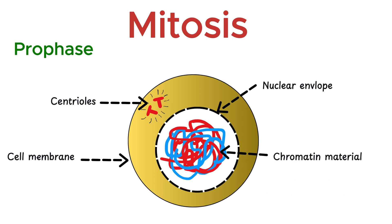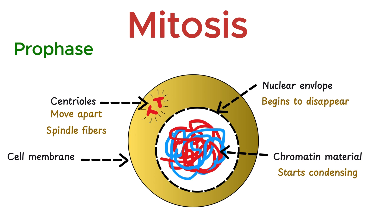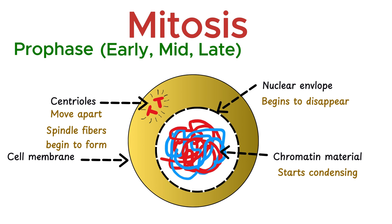First of all, the chromatin material starts to coil and condense into X-shaped structures called chromosomes. The nuclear envelope begins to disappear, the centrioles move apart, and spindle fibers begin to form. All of these events occur in three sub-stages: early prophase, mid-phase, and late prophase.